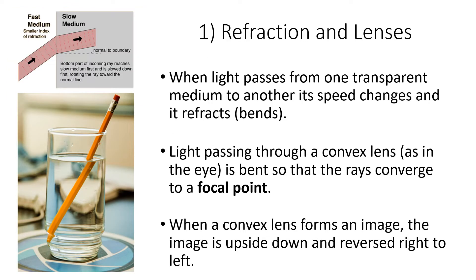Light moves at about 300,000 kilometers per second, and as it moves from one transparent medium to another its speed changes very slightly. It slows down slightly as it enters the denser medium and it's also refracted — it's bent, it's redirected. You can see the figure in the top left: light hitting something at an oblique angle causes the light ray to change direction. 'Normal to boundary' just means perpendicular.